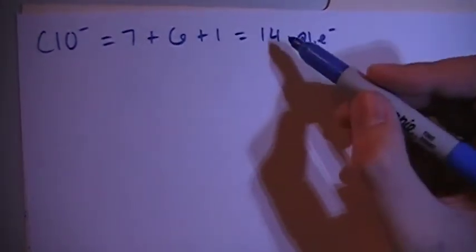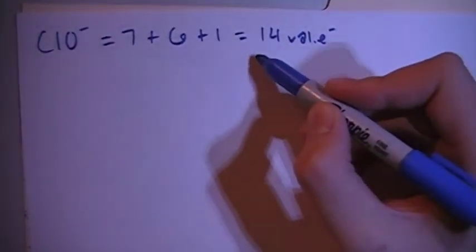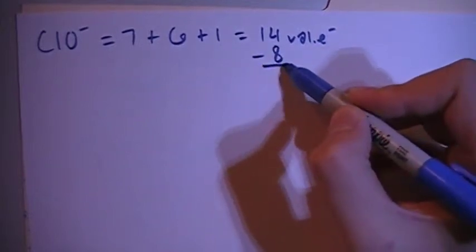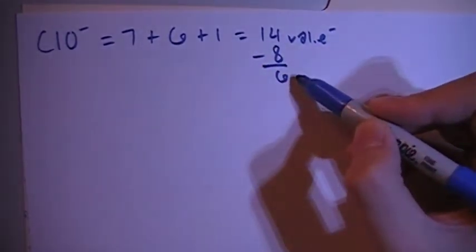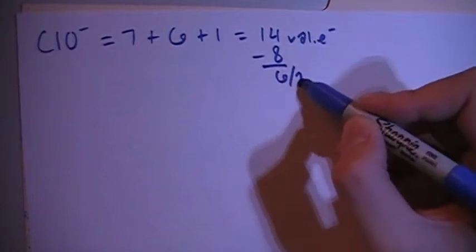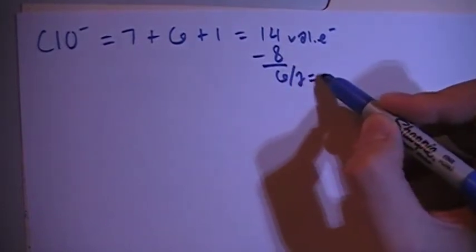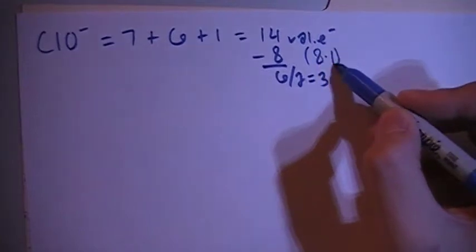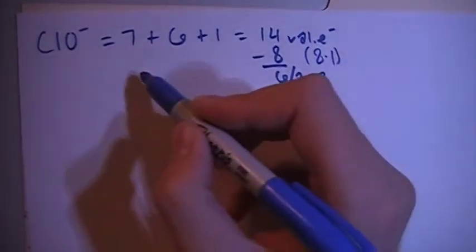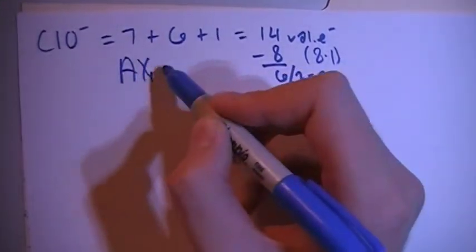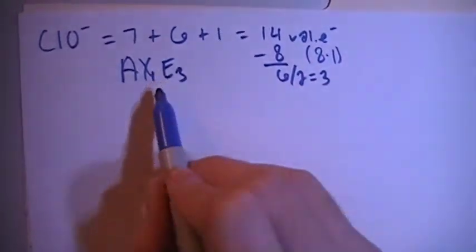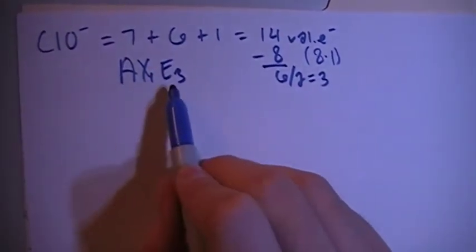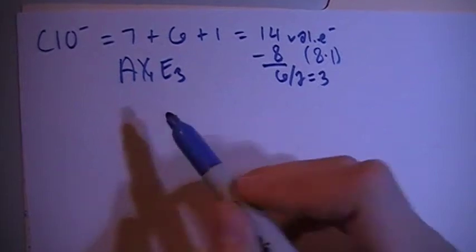We can go ahead and subtract out the largest multiple of 8, which is 8, which leaves us with 6 electrons left. Divide that by 2 gives you 3 non-bonding pairs, and 8 is equal to 8 times 1. So that means this will be an AX1E3 — meaning a central atom, 1 peripheral atom, and 3 non-bonding pairs on the central atom.